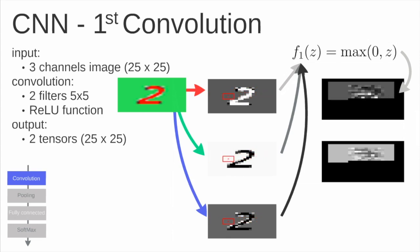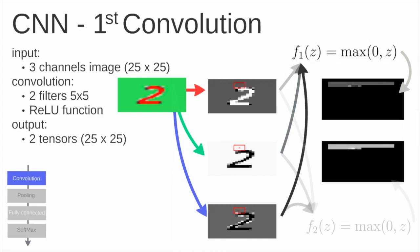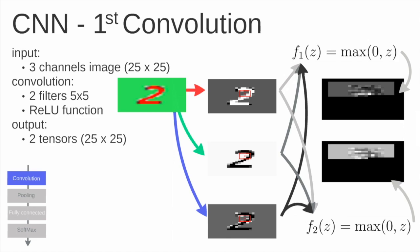In this case this is going to be the max function or rectified linear unit. But we have two filters, so when we apply the second filter and also apply the activation function, we obtain the second output.